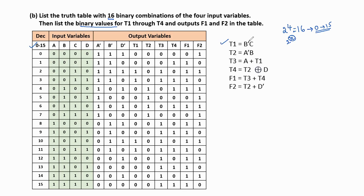For t1 = b'c, first find the b' value, then find t1. For t2 = a'b, first find a', then find t2. For t3 = a + t1 (OR operation). t4 = t2 XOR d. f1 = t3 + t4. Similarly, f2 = t2 + d', so first find d'.